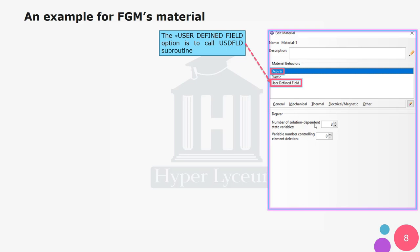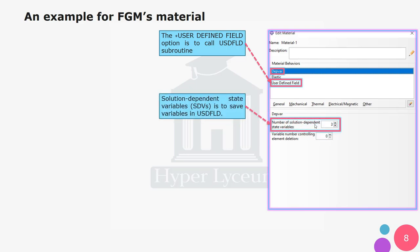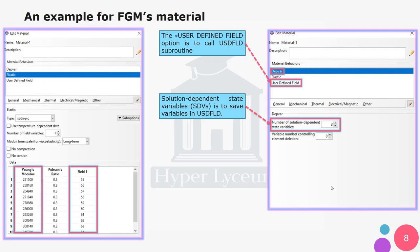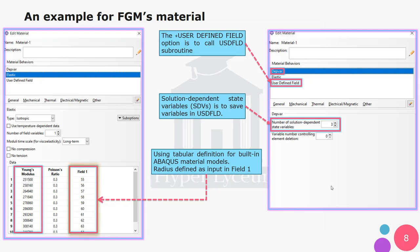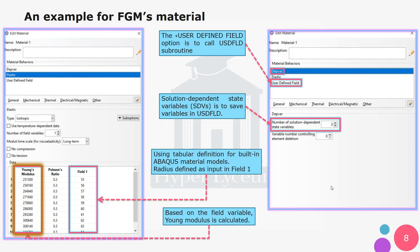To call the USDFLD subroutine in Abaqus, we click on the 'User Defined Field' option. In the DepVar section we define the number of solution-dependent state variables, which is set to three in our example. These tables are used to define materials in Abaqus — the radius of the cylinder is defined as input in field one, and Young's modulus based on the field variable is calculated. When Abaqus reaches field variables, it puts the corresponding values into Young's modulus.